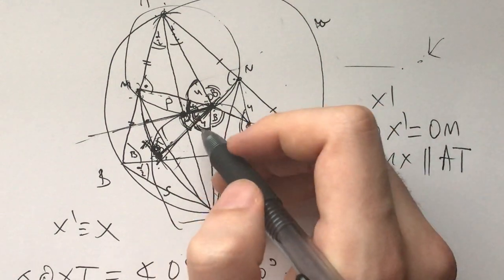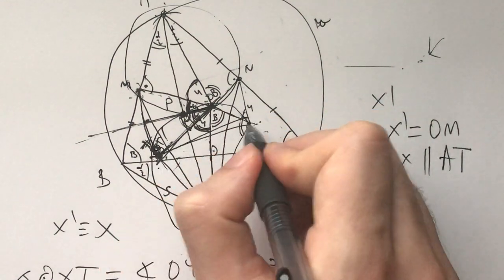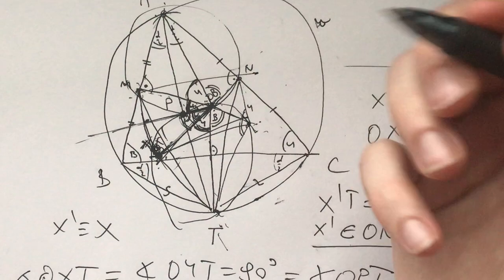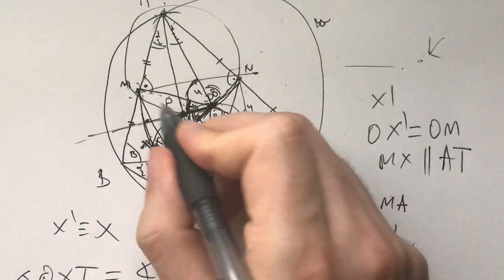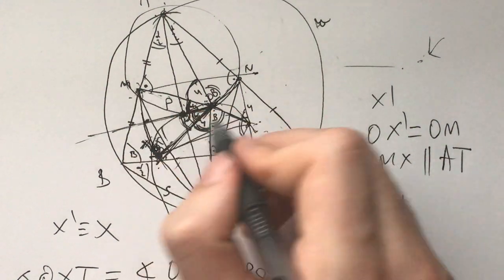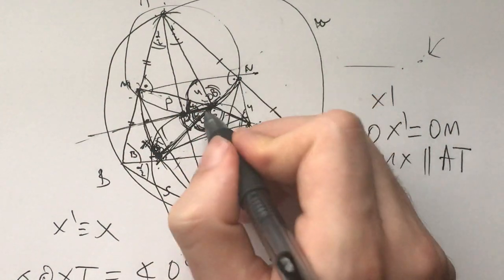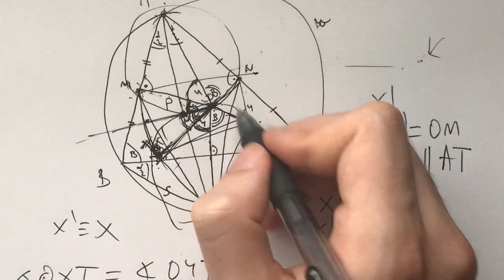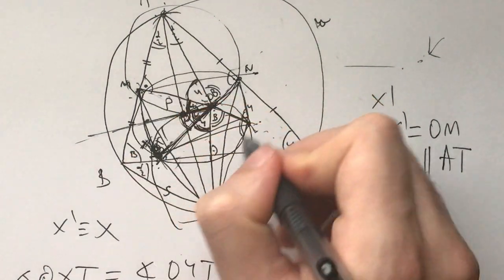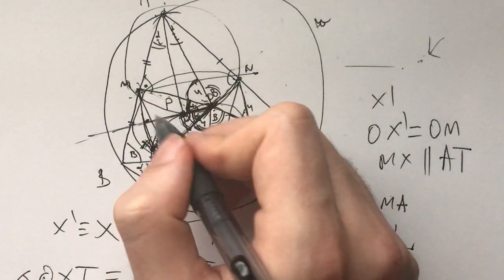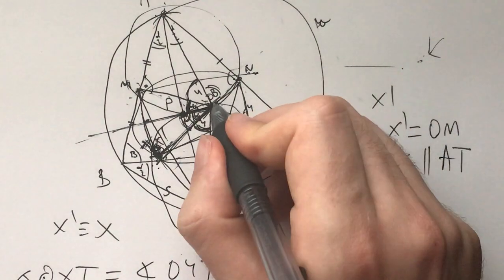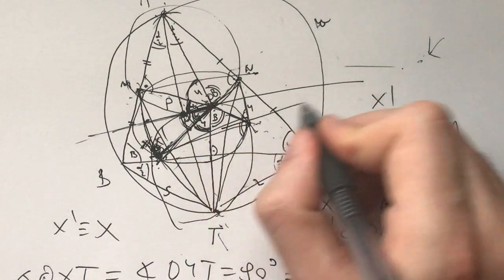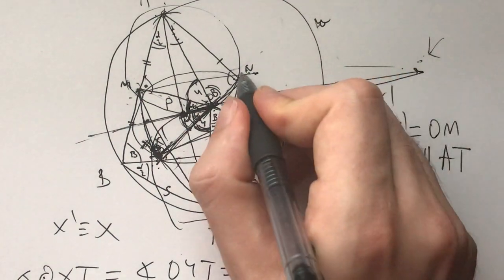And now it's only, we only need to prove that X, Y, M, N lie on the same circle. And that is true. Why? Well, because OY is ON, OX is OM. So OM times OY is ON times OX, which means these four are concyclic as well. Mind you, O is the intersection of the diagonals of this quadrilateral. And now, because all of these are on the circle, that means their radical axes meet at the same point K.